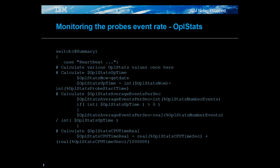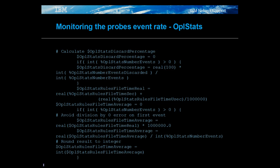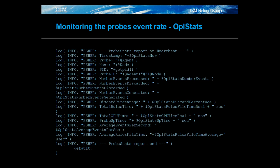The probes support OPL stats features. These are used by the return on investment extension package, but can be used separately. The event statistics are gathered and calculated when a probe watch heartbeat event is created. The rules file code uses the OPL stats tokens to create useful statistics on event processing, for example the average time taken to process events. The calculated information is logged to the probes log file as informational details with the PSHBR prefix to allow the details to be grepped from the log file easily.